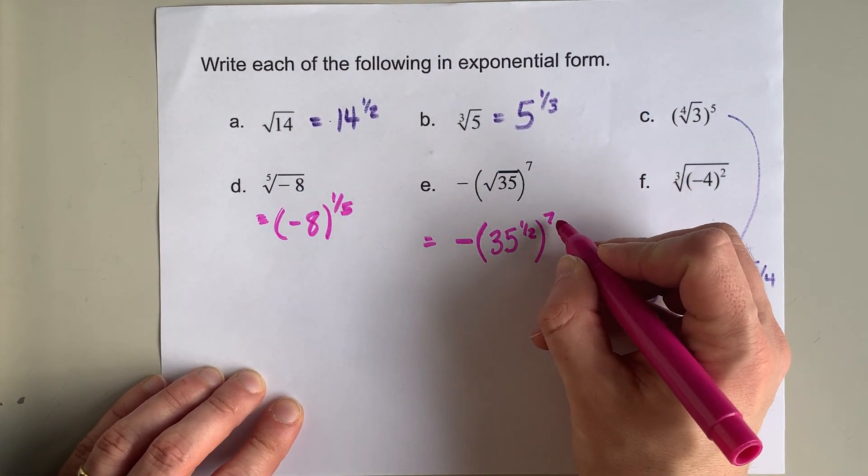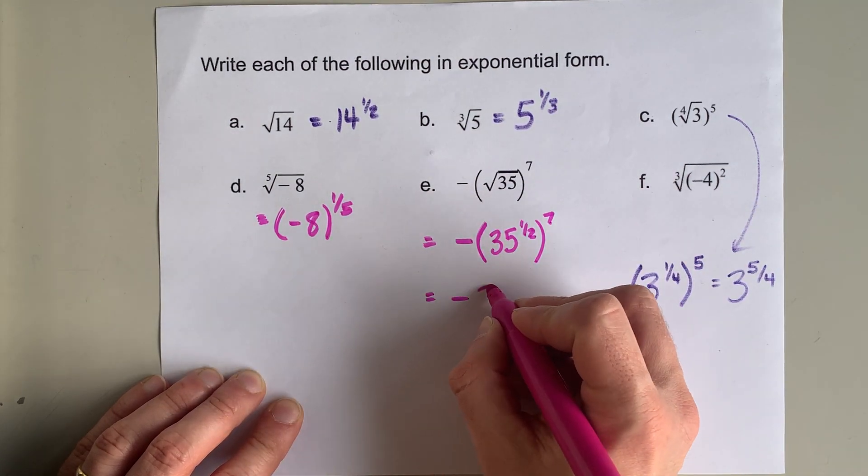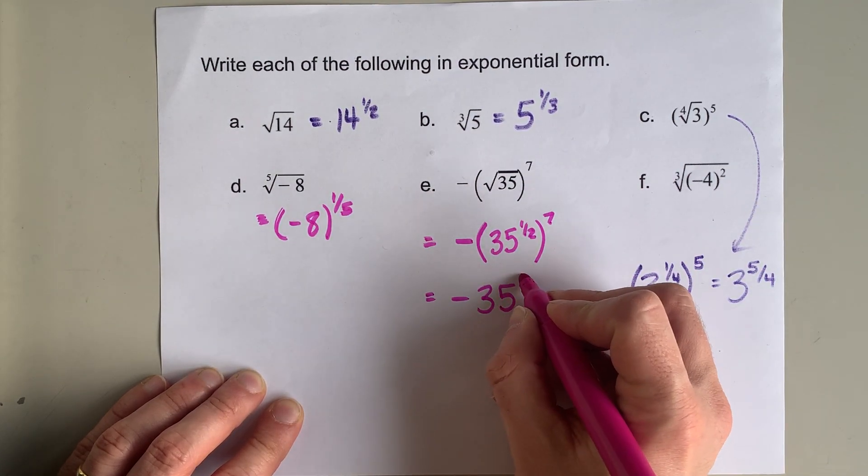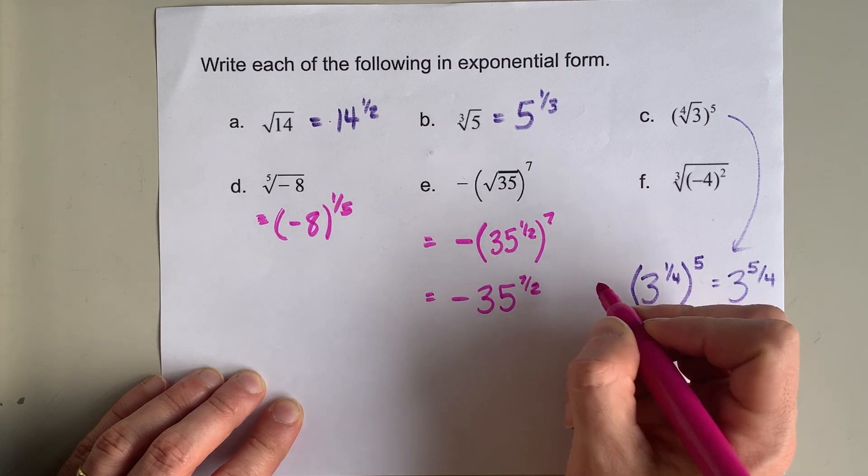Now, power of a power, I can multiply those together. That's negative 35 to the power of seven halves.